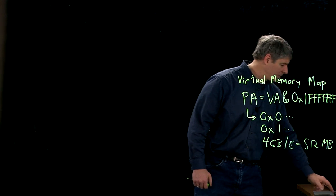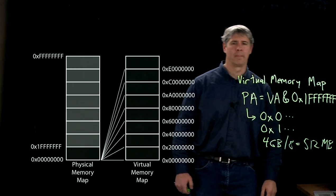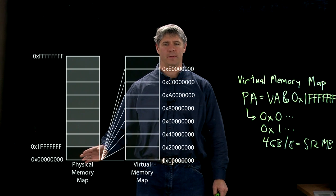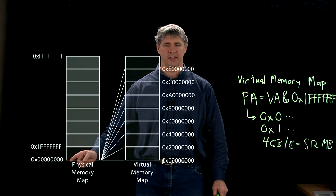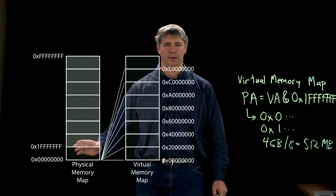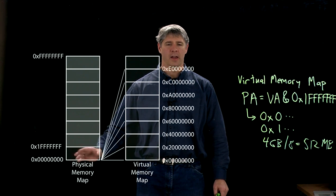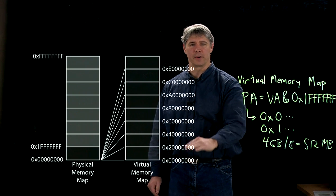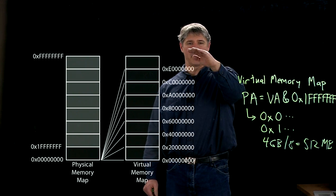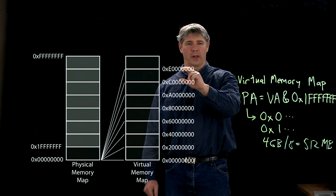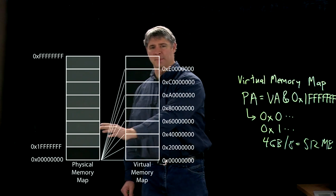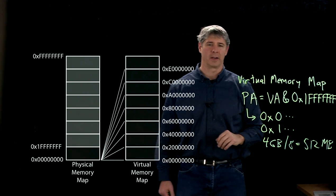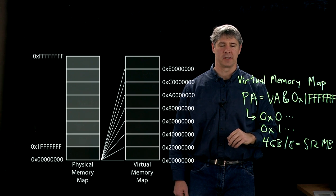We can see that graphically here. Here's our physical memory map — all addresses start with a zero or a one, giving us this 512 megabyte segment. And over here in our four gigabyte virtual address space, each 512 megabyte segment maps down to this same 512 megabyte physical address space.